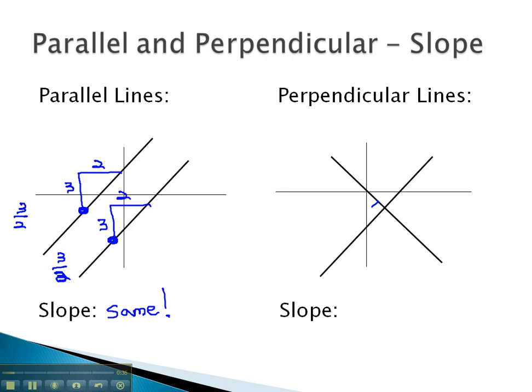With perpendicular lines, or lines that meet at a right angle, to make them intersect, if one rises 2 and runs 3, to make the intersection happen at a right angle, as a result of the Pythagorean theorem, it turns out we must drop 3 and run 2. Notice our slopes now are 2 thirds and negative 3 halves. Perpendicular lines have what are called opposite reciprocal slopes.